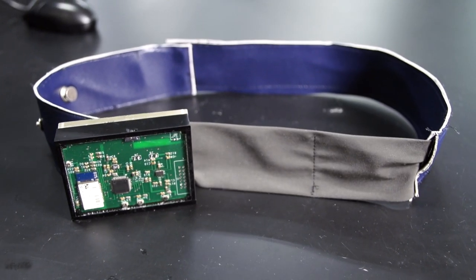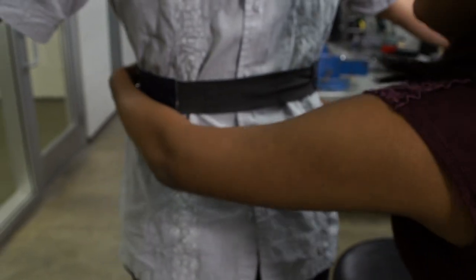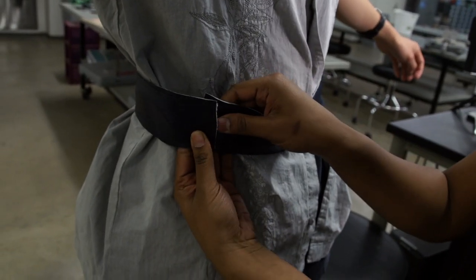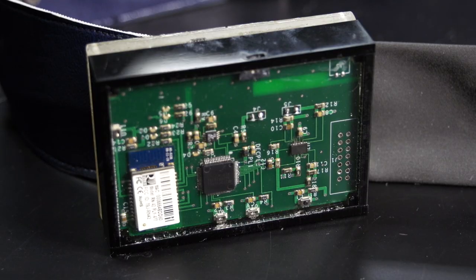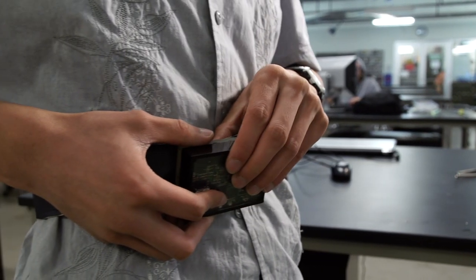We have created the smart belt. This is the device itself—a belt that you wrap around the chest. Andrew will demonstrate. Simply wrap it around and connect these two snaps right here. That completes the electrical connection inside the belt. Then place the electronic module onto the belt.